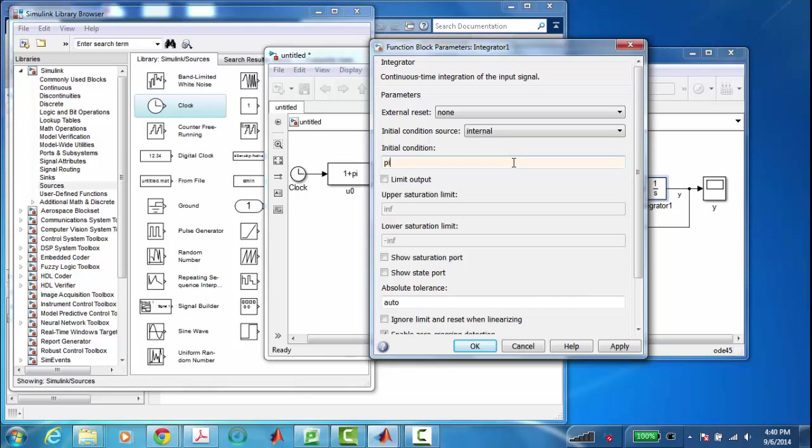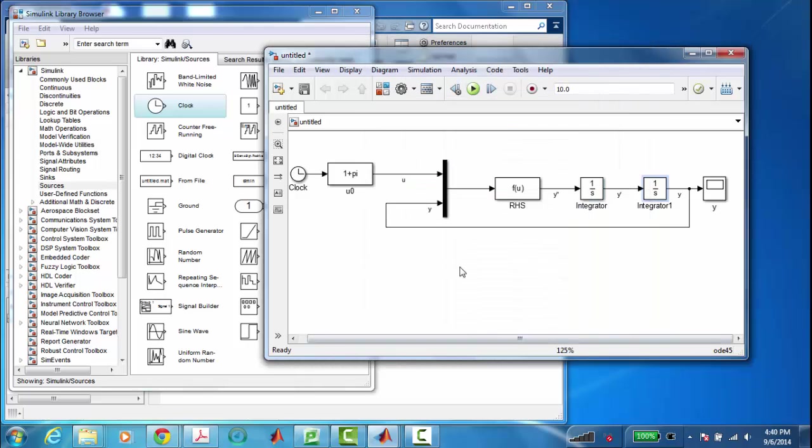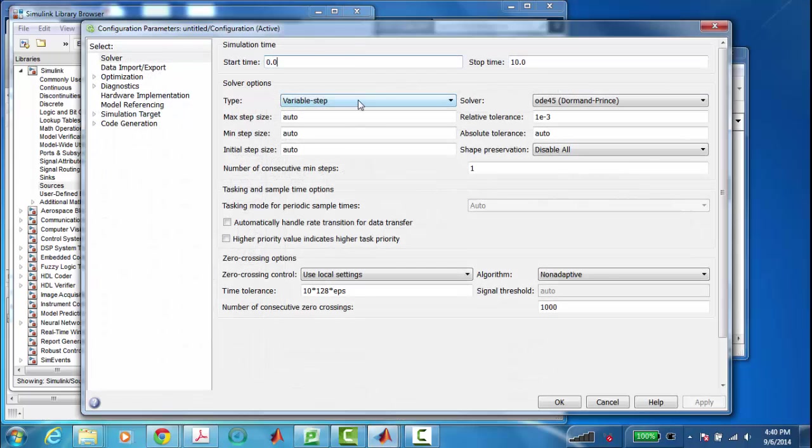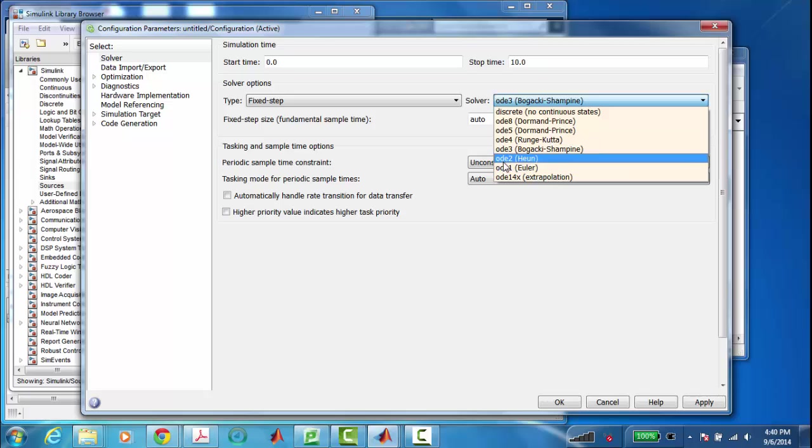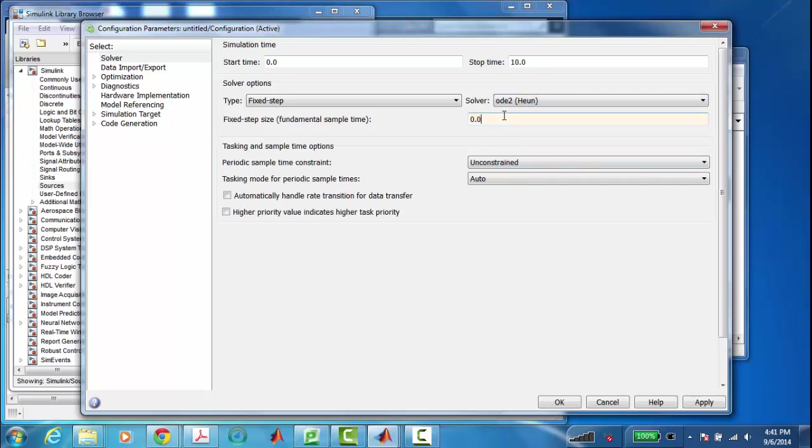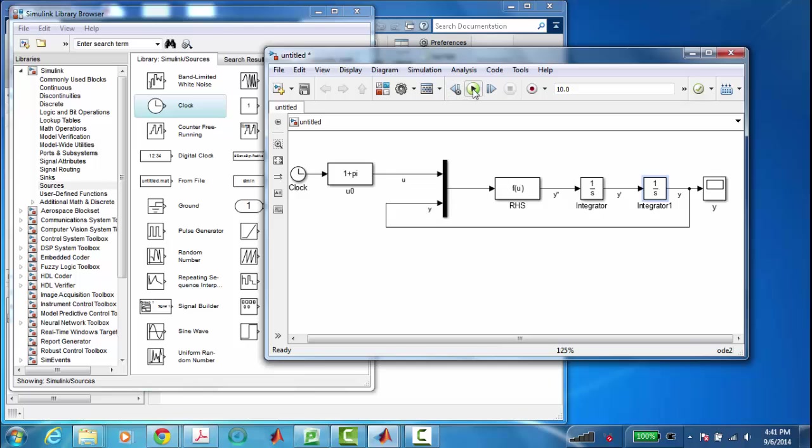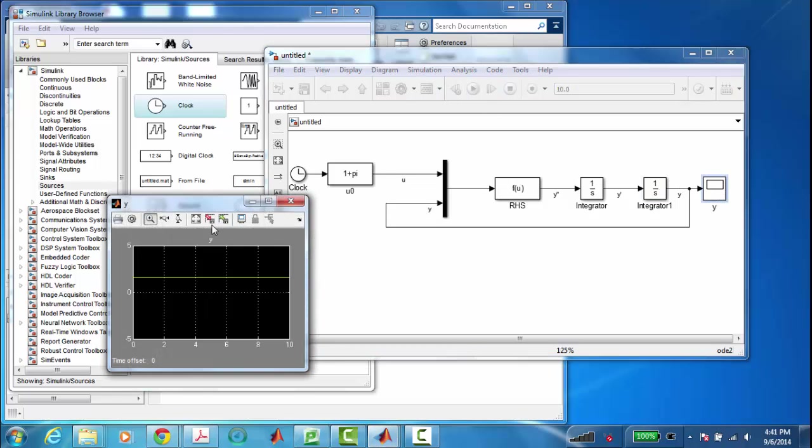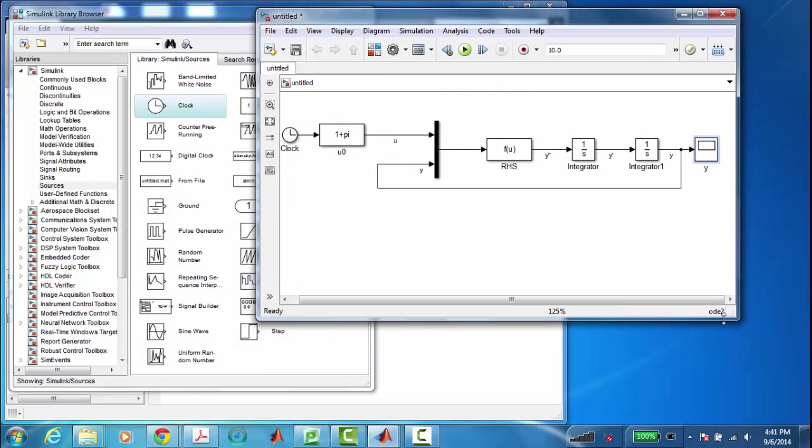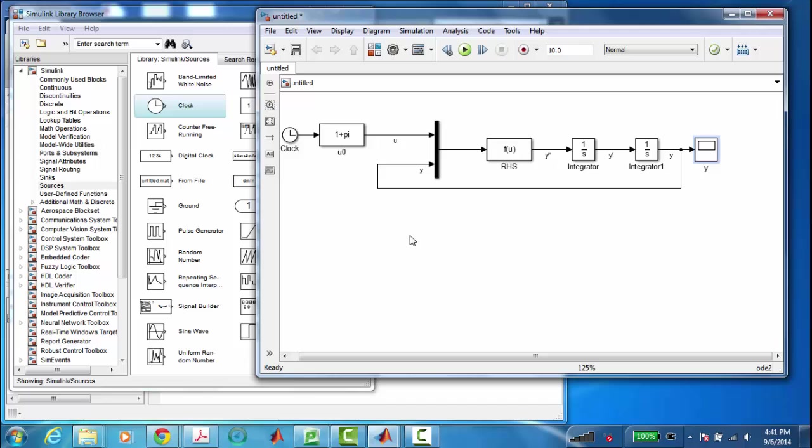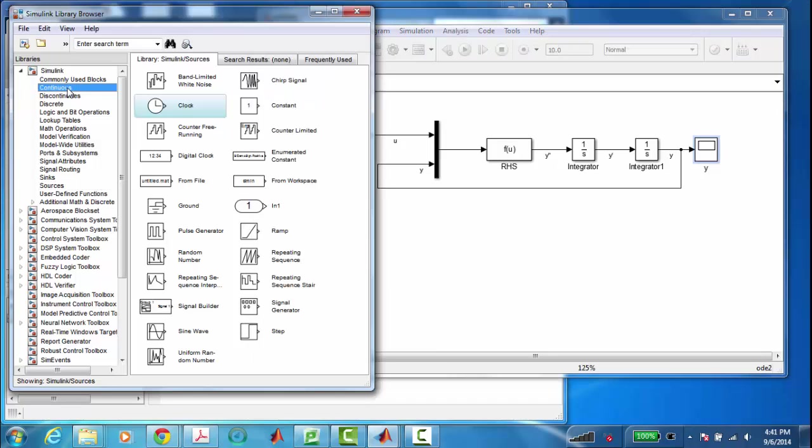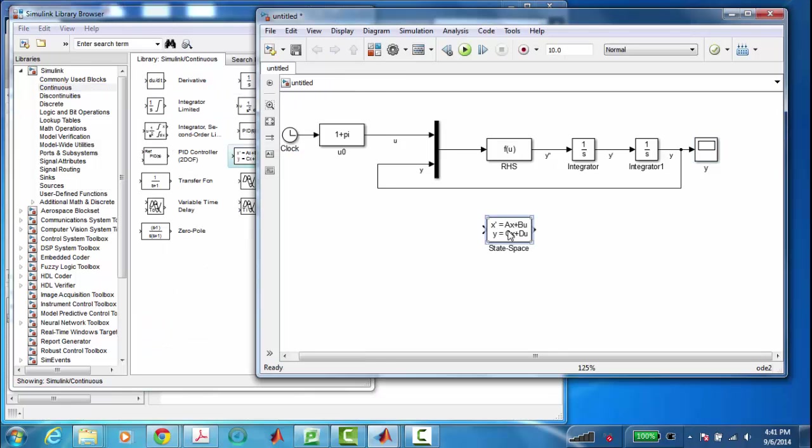Now, I have to set some initial conditions. The initial condition on y was pi over 2. So, that's this, the output of this integrator. And, we'll set up the integration method. Use the second order method. Point zero one should be ample fast enough. And, let's run it. There's y. Beautiful. Just sitting there at pi over 2. Exactly what it should do. Basically, we're letting the system go. And, it just sits there. Because, we have 1 plus pi as the input. It's nicely consistent with our equilibrium point of pi over 2.